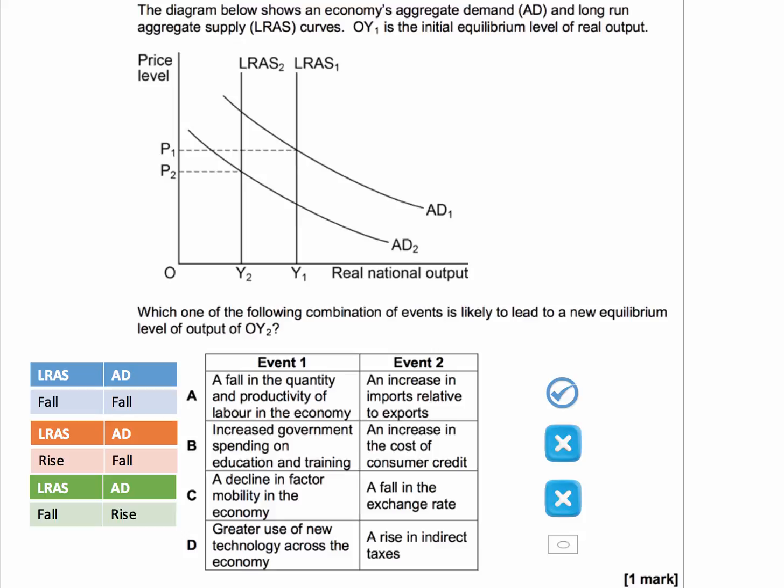And D, greater use of technology across the economy. Again, likely to increase aggregate supply. A rise in indirect taxes is likely to cause a fall in aggregate demand because of a fall in real income.